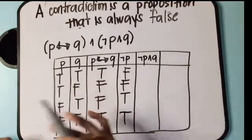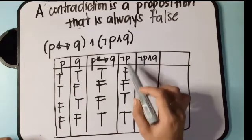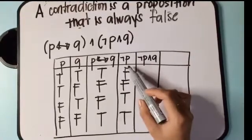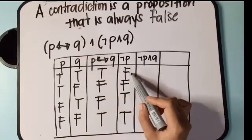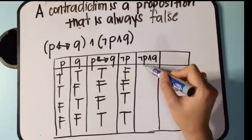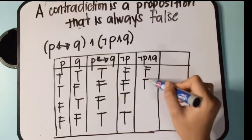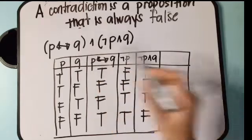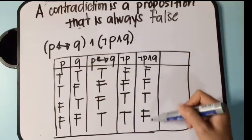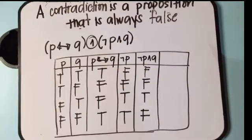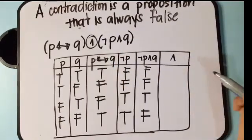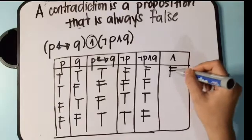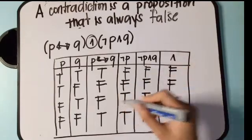Now we combine the negation of P and Q using conjunction — be careful which values you use. Negation of P and Q: false and true is false, false and false is false, true and true is true, true and false is false. Then we combine the biconditional column and this conjunction column using conjunction again: true and false is false, false and false is false, false and true is false, true and false is false.